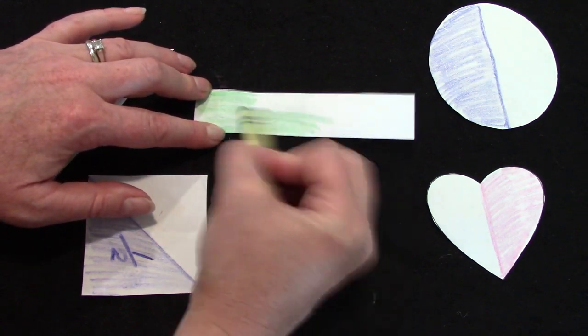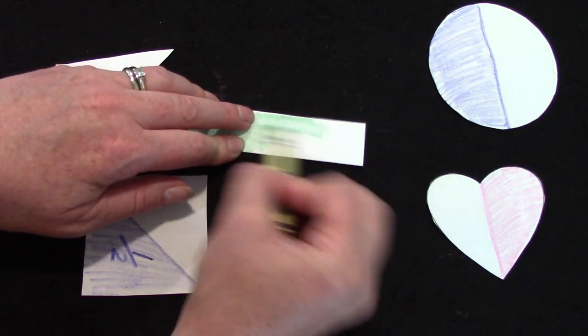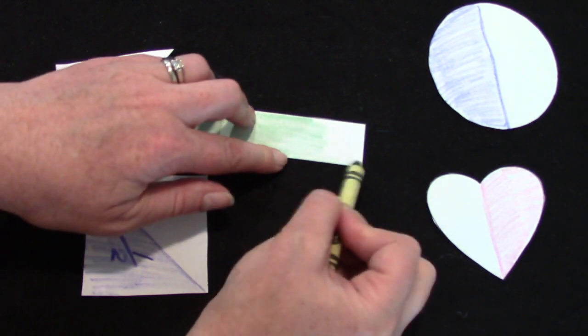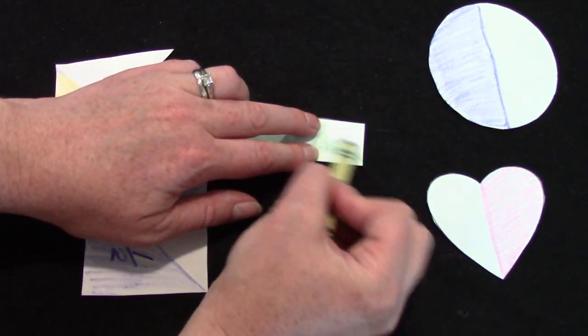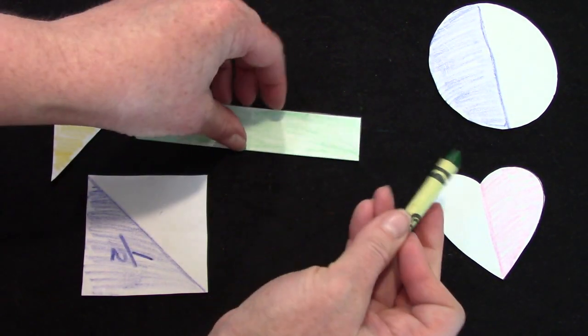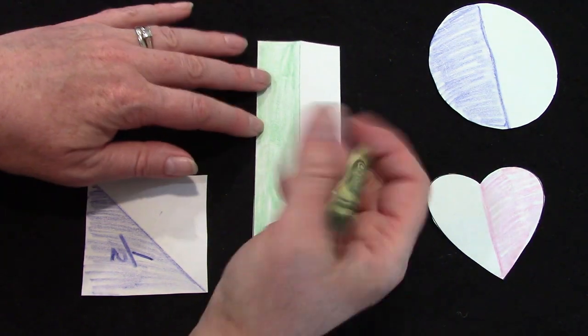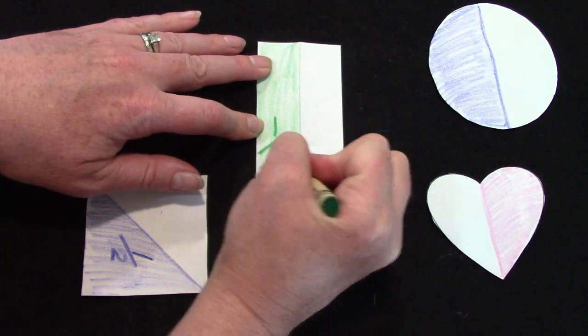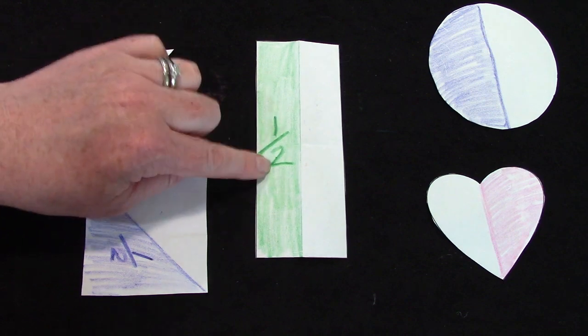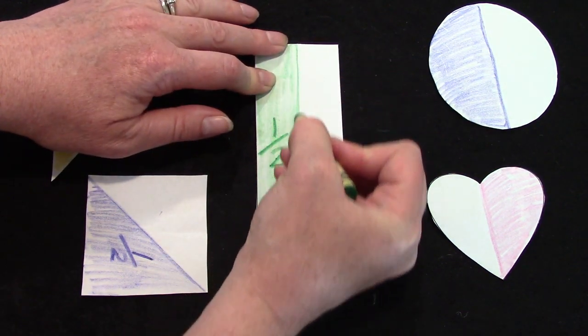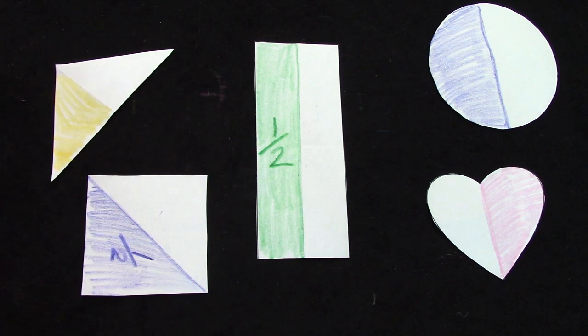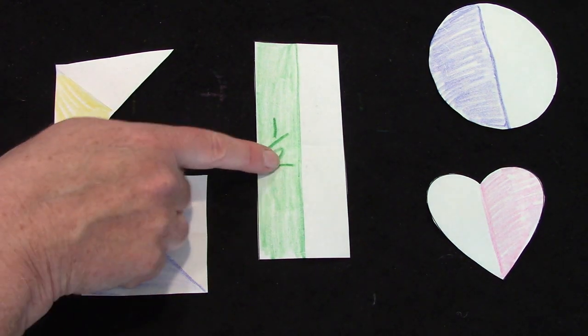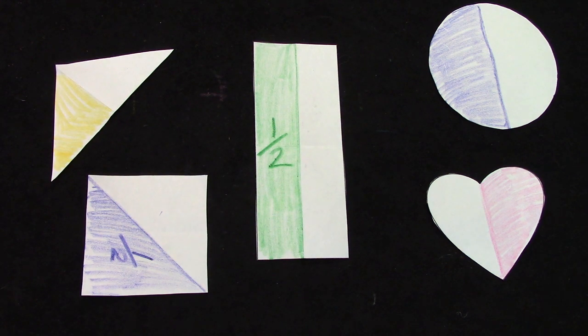Sometimes in math there is more than one way to come up with the solution or the answer to a problem. Oh, look at this. I have colored one half, or one out of the two pieces of this rectangle. When we divide something in half, both sides need to be the same size.